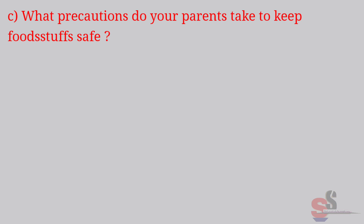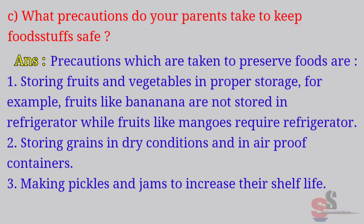C. What precautions do your parents take to keep foodstuff safe? Answer: Precautions taken to preserve foods are: storing fruits and vegetables in proper storage. For example, fruits like banana are not stored in refrigerator while fruits like mangoes require refrigerator. Storing grains in dry conditions and in airtight containers. Making pickles and jams to increase their shelf life.